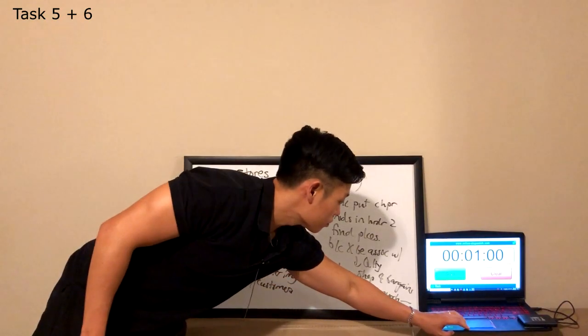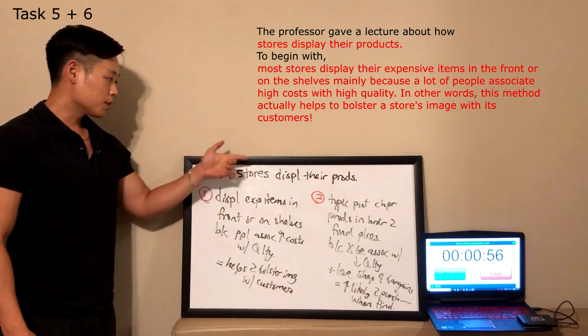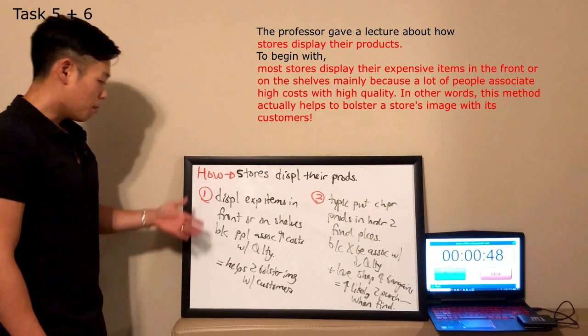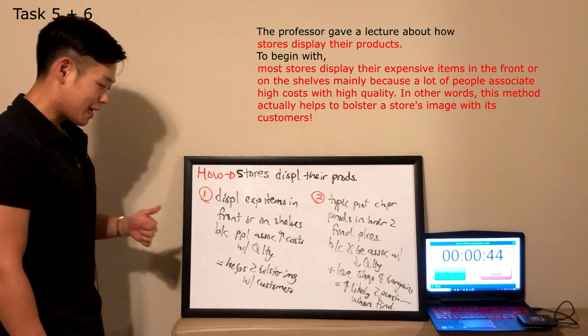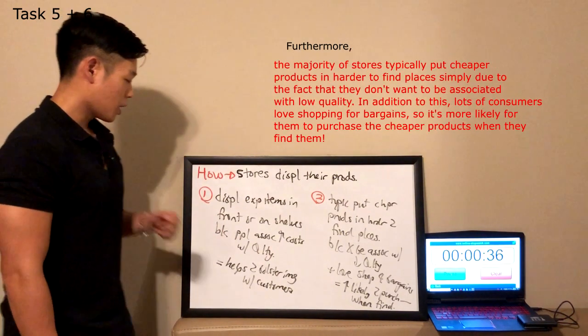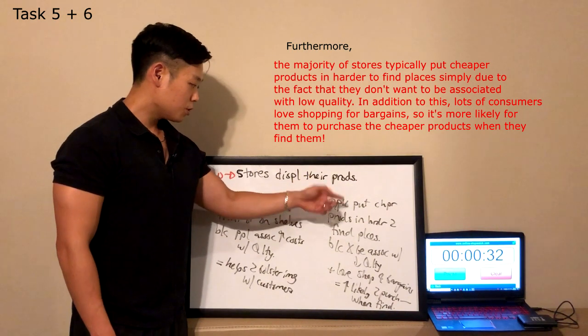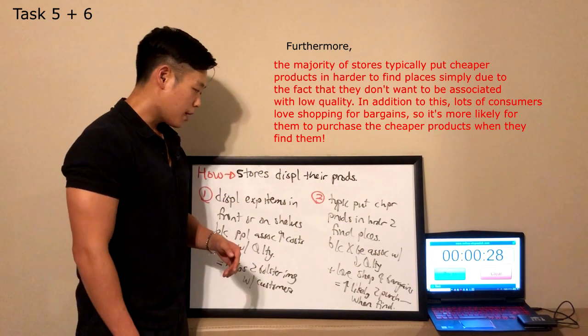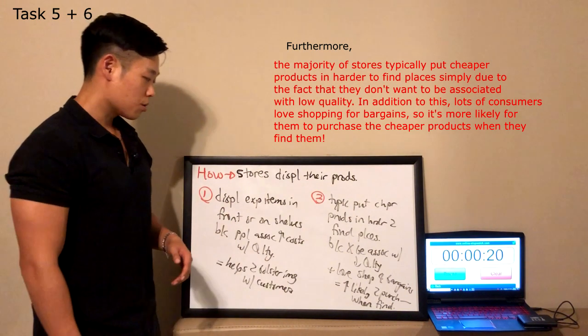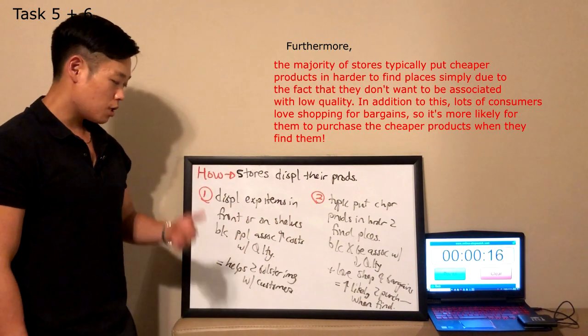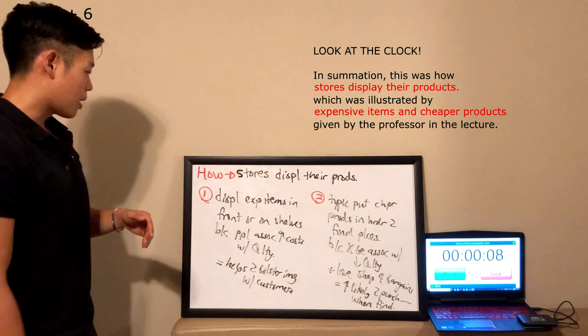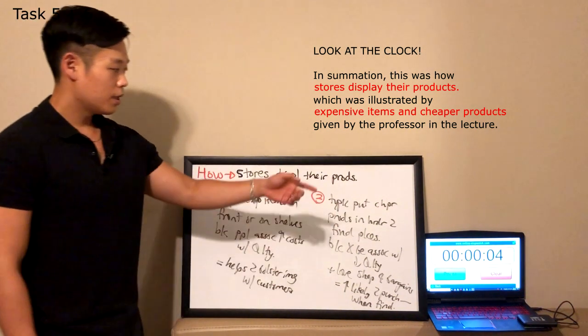The professor gave a lecture about how stores display their products. To begin with, most stores display their expensive items in the front or on the shelves, mainly because a lot of people associate high costs with high quality. In other words, this method actually helps to bolster a store's image with its customers. Furthermore, the majority of stores typically put cheaper products in harder to find places, simply due to the fact that they do not want to be associated with low quality. In addition to this, lots of consumers love shopping for bargains, so it's more likely for them to purchase the cheaper products when they find them. In summation, this was how stores display their products, which was illustrated by expensive items and cheaper products given by the professor in the lecture.